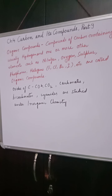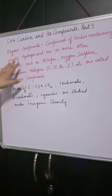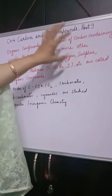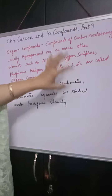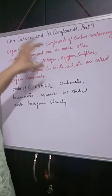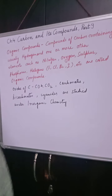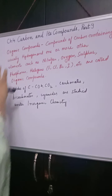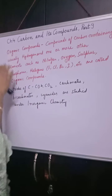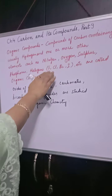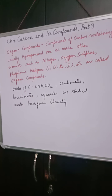So what is the modern definition of organic compounds? The modern definition states that organic compounds are compounds of carbon, usually containing hydrogen. Carbon is a must — it must be present. Apart from carbon and hydrogen, the structure may also contain nitrogen, oxygen, sulfur, phosphorus, or halogens like fluorine, chlorine, bromine, or iodine. These are called organic compounds.